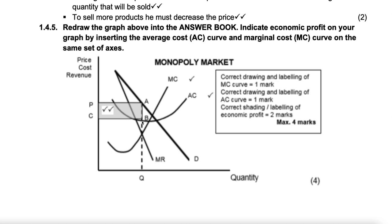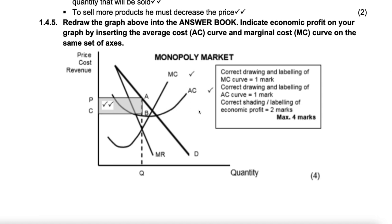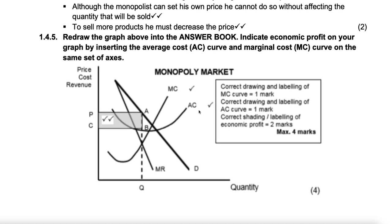From the intersection point, draw a line and shade the area — that's your economic profit. Things to look out for: make sure AC is below D and AR. MC must cut AC at its lowest point. Then shade the area for economic profit. When they allocate marks for AC, they also check that MC cuts AC at its lowest point and that AC is below AR or D, as per the instruction given. C stands for cost, P for price, and Q for quantity.